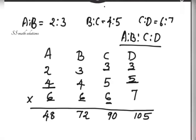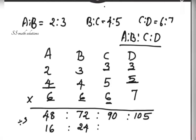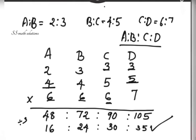Now, is anything common? Yes, 3 is a common factor for all four numbers: 48, 72, 90, and 105. So we simplify: 48 by 3 is 16, 72 by 3 is 24, 90 by 3 is 30, and 105 by 3 is 35. So the simplest form of a is to b is to c is to d is 16 is to 24 is to 30 is to 35.